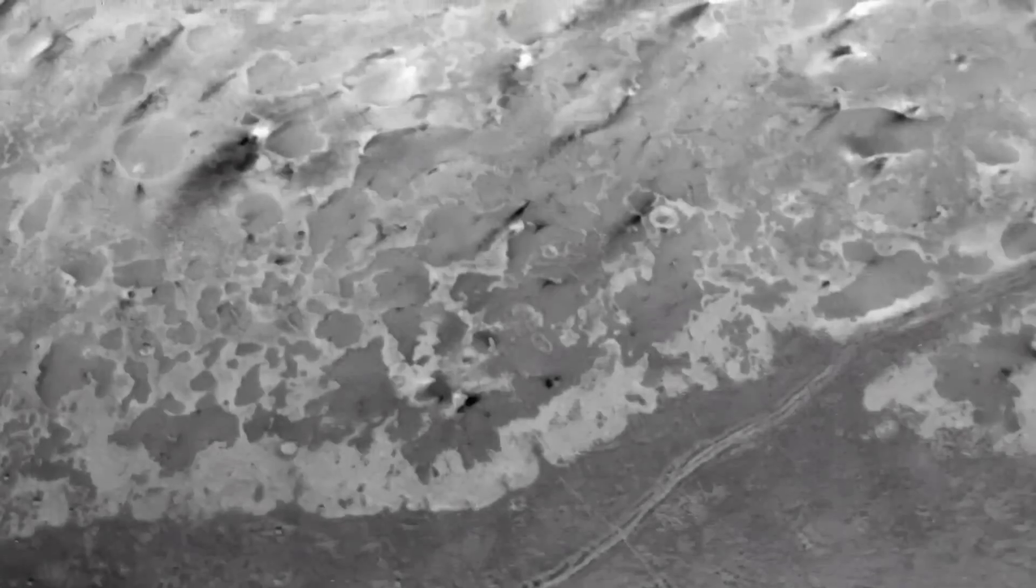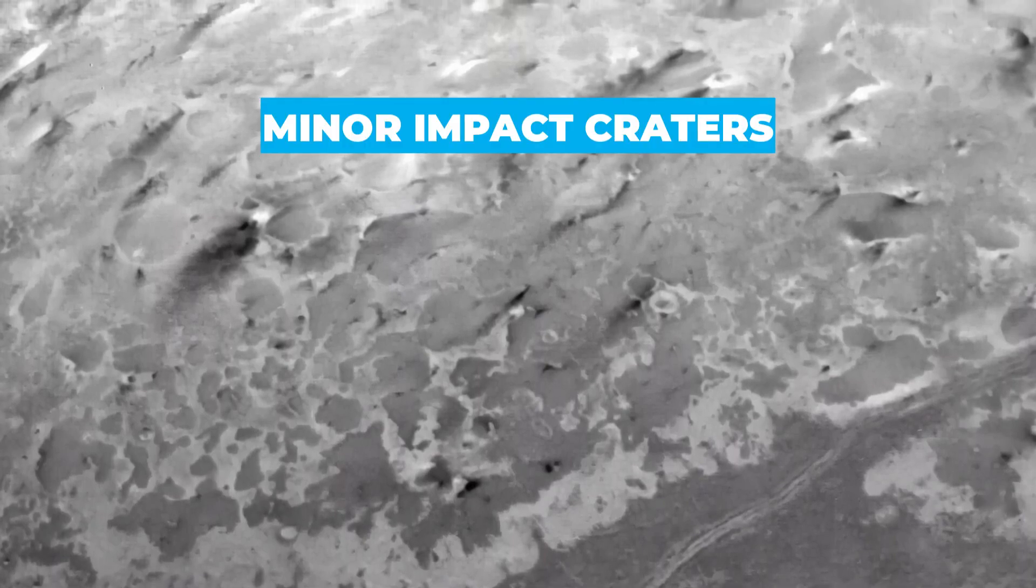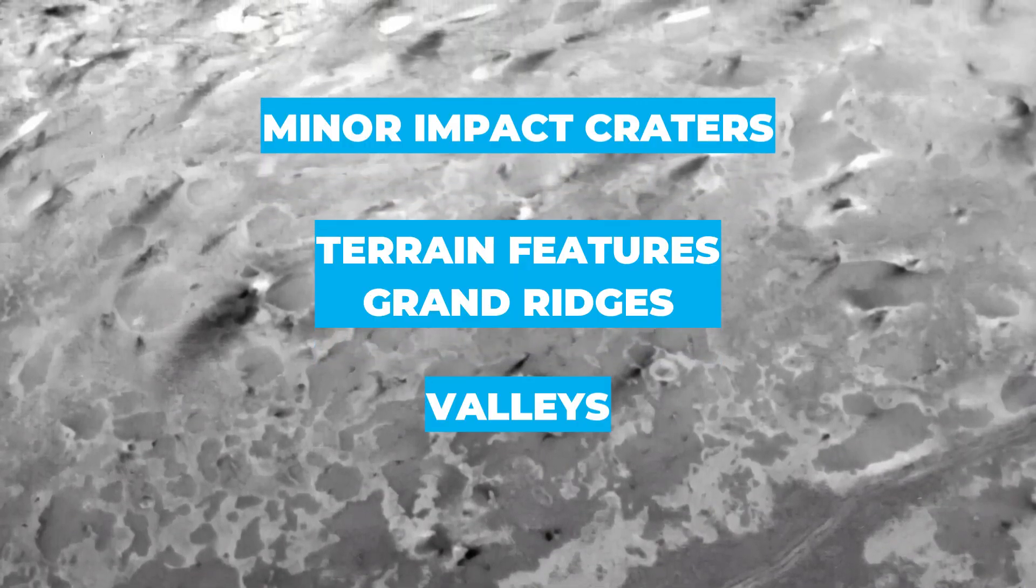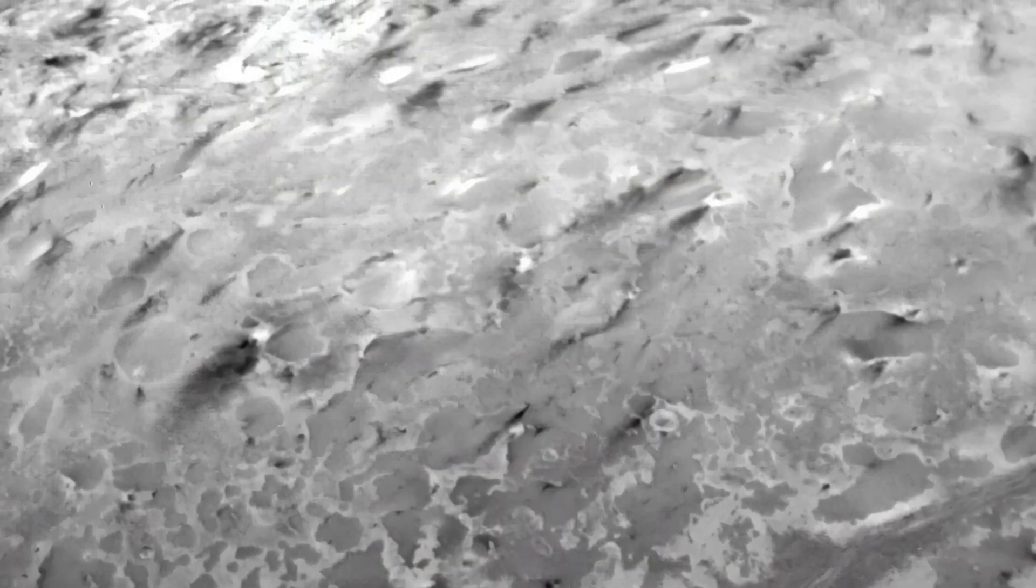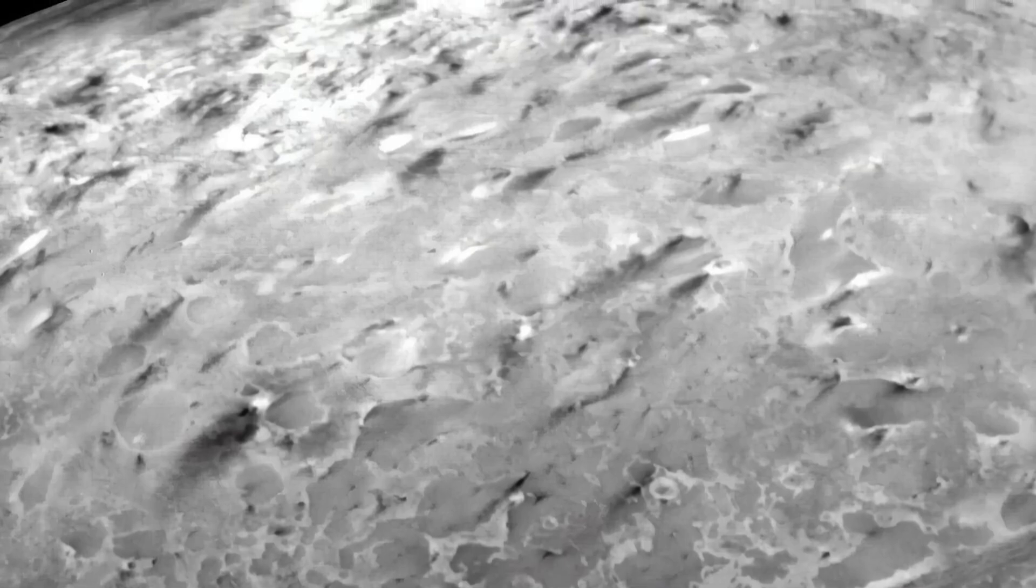Despite its distance, Triton's surface shows signs of ongoing geological activity with minor impact craters, terrain features, grand ridges, valleys, and dark stripes, indicating a recovery process unlike what would be expected from conventional impact cratering.